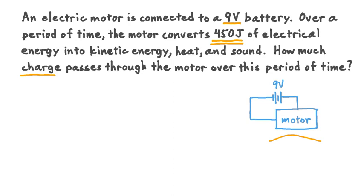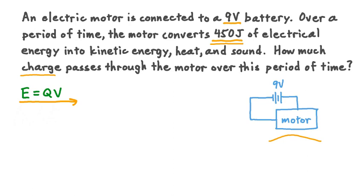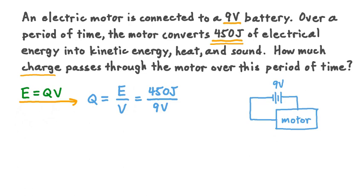To figure this out, we can recall a relationship that connects voltage, energy, and charge. Electrical energy E is equal to the amount of charge Q multiplied by the potential difference across which the charge moves, V. In our particular case, we want to solve for the charge Q, so we rearrange: charge Q is equal to energy divided by voltage. We're told the energy used by the motor is 450 joules and the voltage is 9 volts. This fraction comes out to 50 coulombs of charge — the amount of charge that passes through the motor over this period of time.